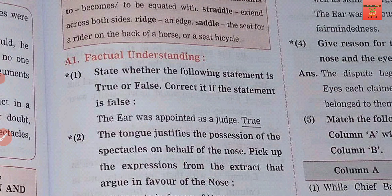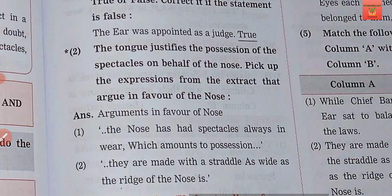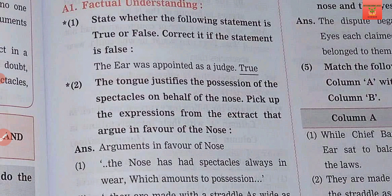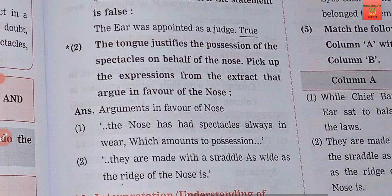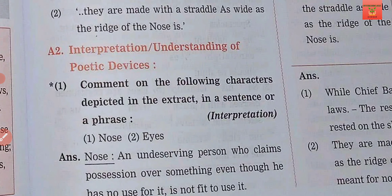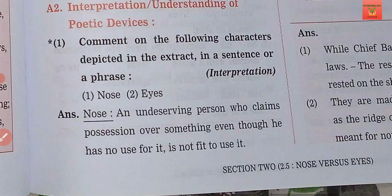First you will see True or False questions based on the poem. Next, you have to choose and pick out the answer. In interpretation, you have to comment on the following characters depicted in the extract. Our two characters are the Nose and the Eye, and we have to describe them.